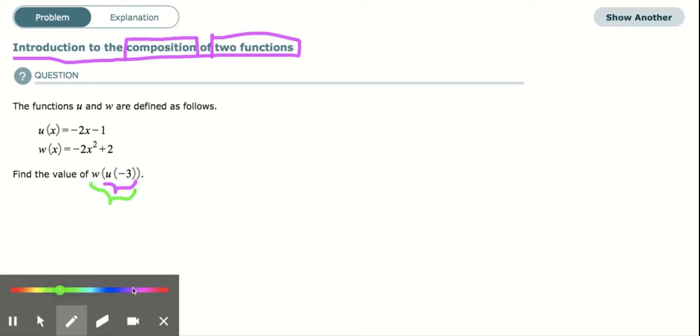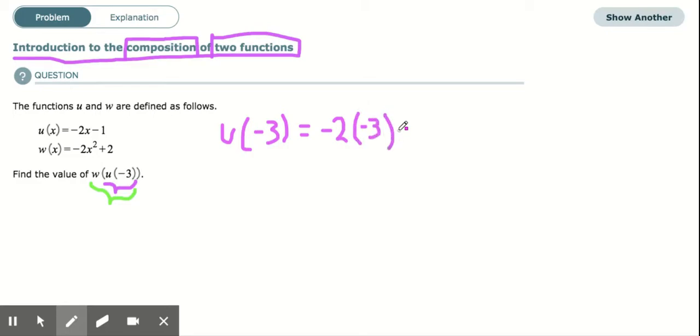You start with the function u. So you're finding u(-3). Wherever you see an x, you're going to replace that with negative 3. So negative 2x becomes negative 2 times negative 3 in parentheses, minus 1.